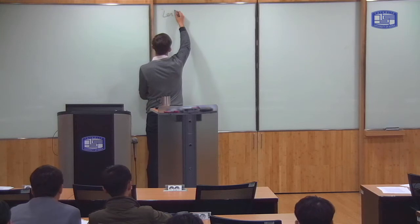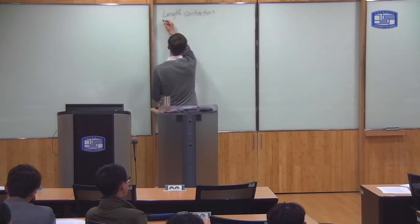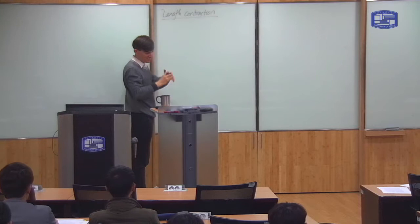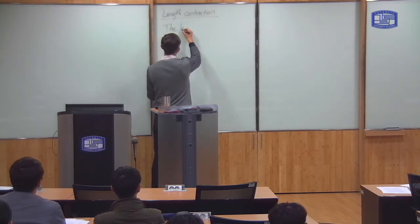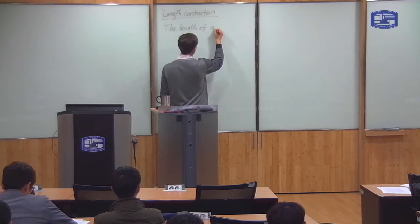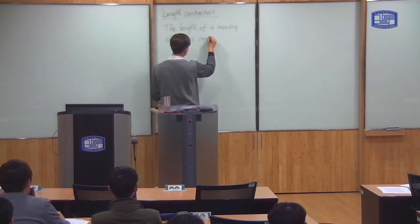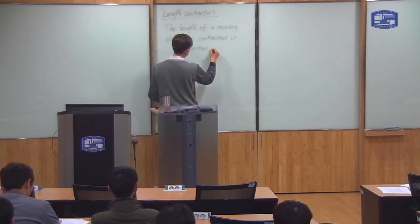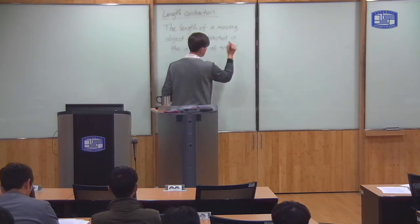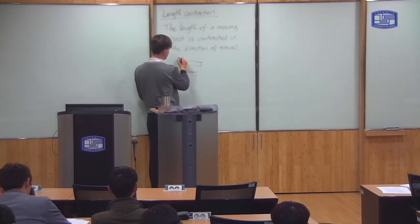So the first one is length contraction. And this says that the length of a moving object is contracted in the direction it's moving. So I'll draw a picture for that. Suppose that you've got a stationary object, take a rectangle like this. When the object is stationary, it has a length L.